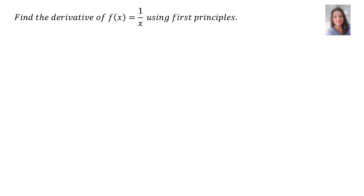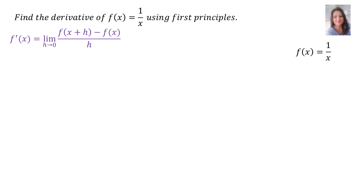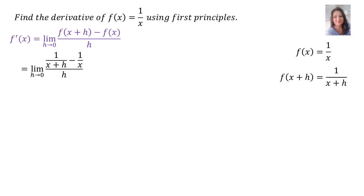I also want to explain this question: find the derivative of f of x equals 1 over x using first principles. The first thing you do is write down the formula from the formula sheet. On the right-hand side, f of x is 1 over x, therefore f(x plus h) is equal to 1 over x plus h, and that's what you substitute into your sum. So the limit h tends to 0 of 1 over x plus h minus 1 over x, everything over h.